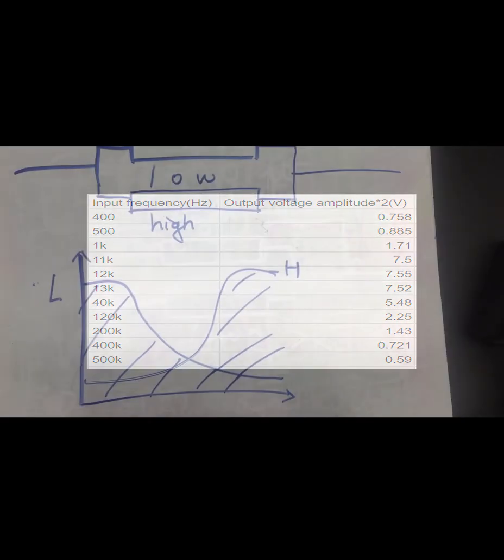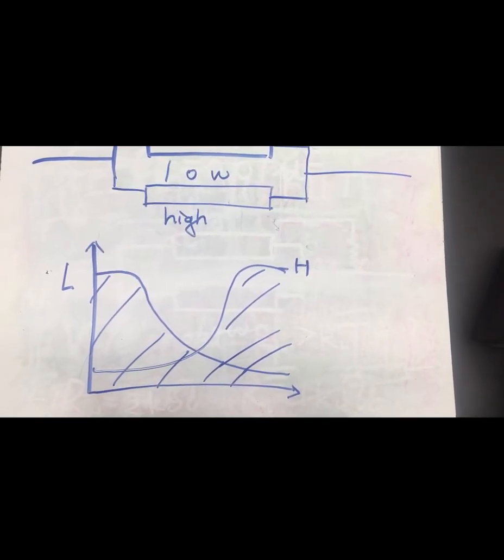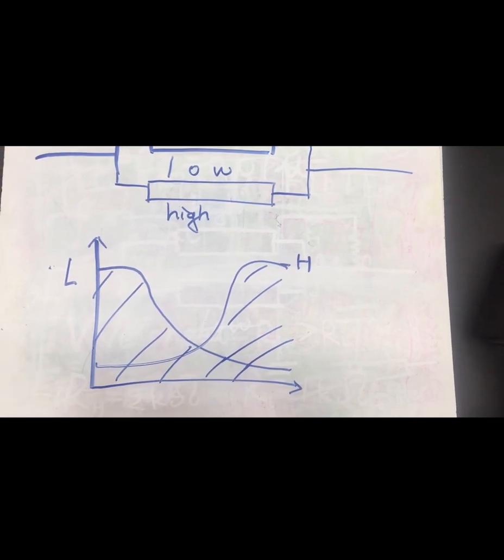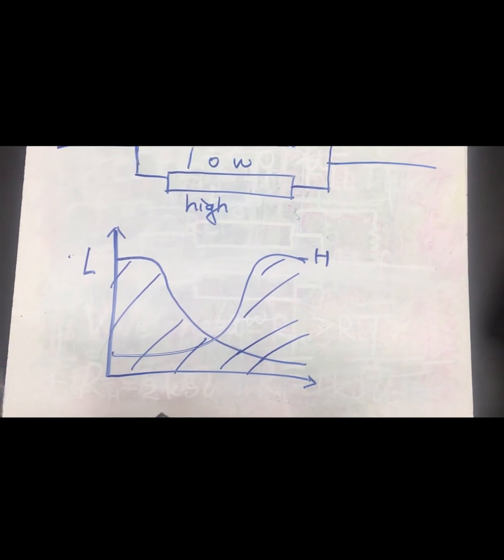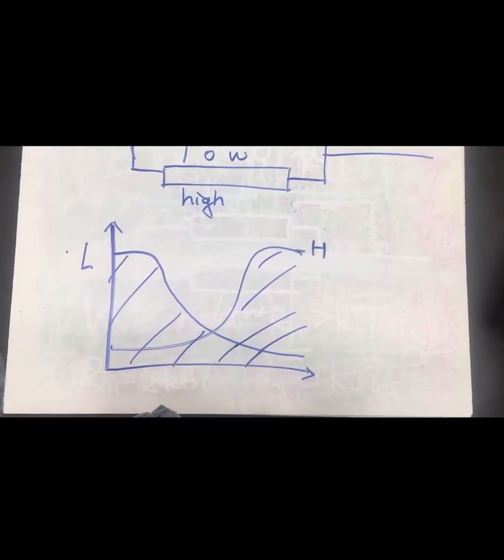For further possibility, a rough notch filter could possibly be built if high pass filter and low pass filter are connected in parallel. We will leave this question for the audience to explore. Thank you for watching.